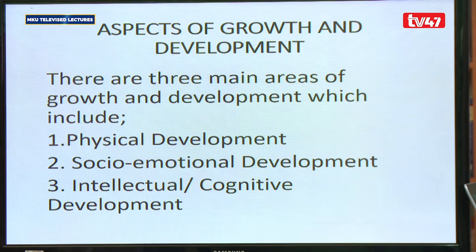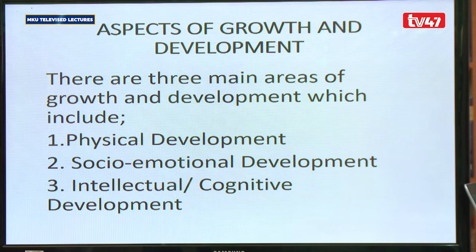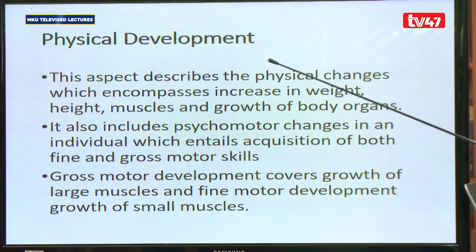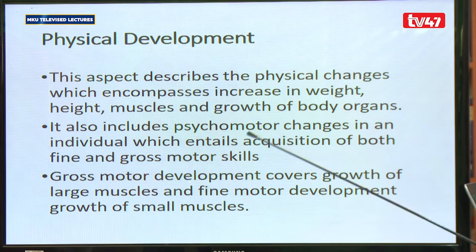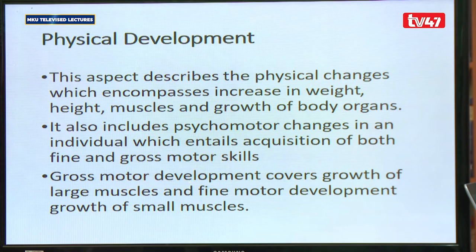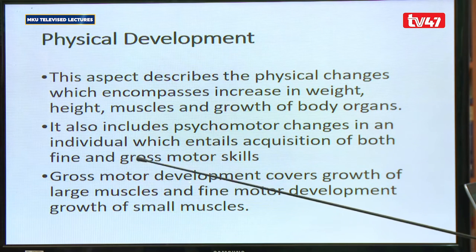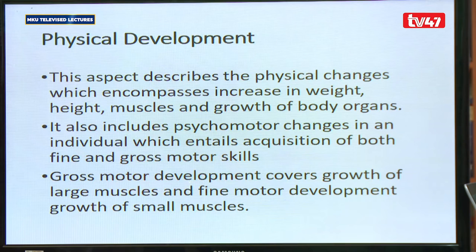As you say that a child is growing and developing, we may be interested to know how the child is developing and which areas show changes. Physical development, as an aspect, describes physical changes — encompassing increase in weight, height, muscles, and growth of various body organs. Physical development also includes psychomotor changes, which entails acquisition of motor skills. We have two types of motor skills: fine and gross motor skills, which are developed as a result of development.